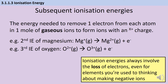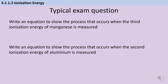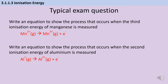It's crucial to recognize that ionization energy is always about the loss of electrons — regardless of the fact that oxygen typically forms O2- ions. For practice: the third ionization energy of manganese starts with gaseous Mn2+ ions losing one electron to make Mn3+ ions. For the second ionization energy of aluminium, we start with Al+ and lose one electron to make Al2+. We're only ever losing one electron at a time.